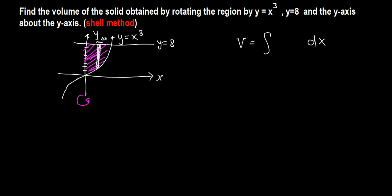This is any point on the curve, x comma y, and y is given by x cubed. We want to write everything in terms of x because our volume formula will be in terms of x.